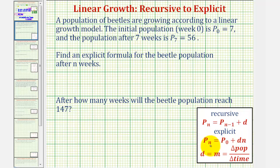The explicit equation is pₙ = p₀ + dn, where p₀ is the initial population, which we know is seven, and the common difference d is the same as the slope of the line, which equals the change in population divided by the change in time.